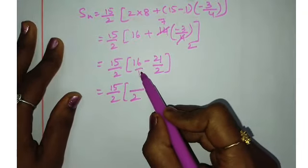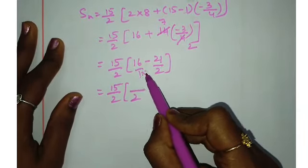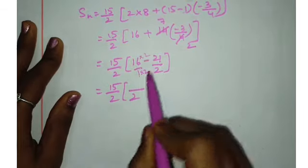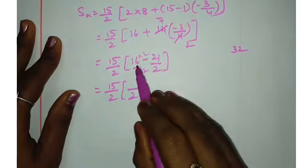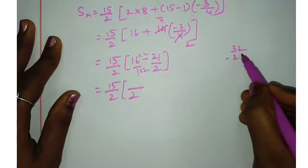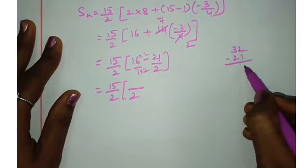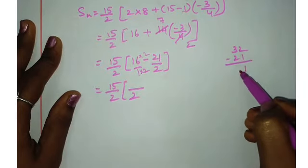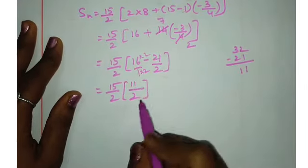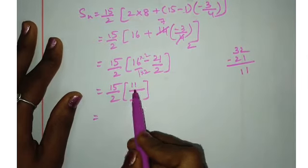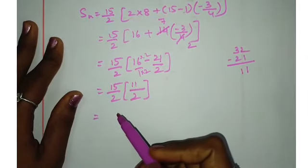Here is 1. 2 is equal to the numerator. 2 is equal to 32 minus 21. 2 minus 1 is equal to 1. Then 3 minus 2 is equal to 1. So 11 by 2 is equal to 2.